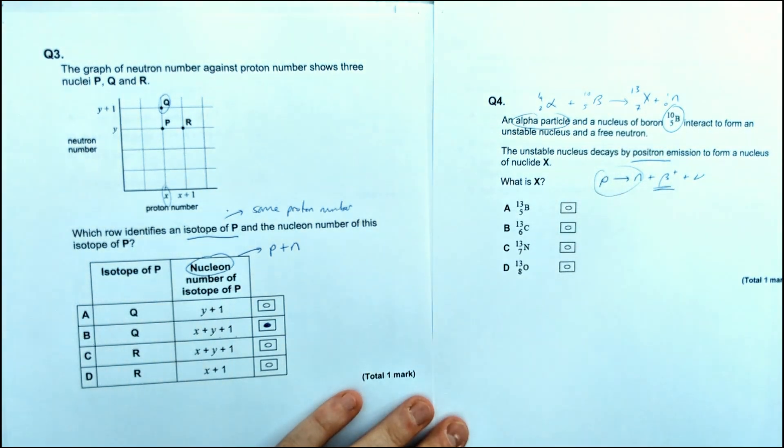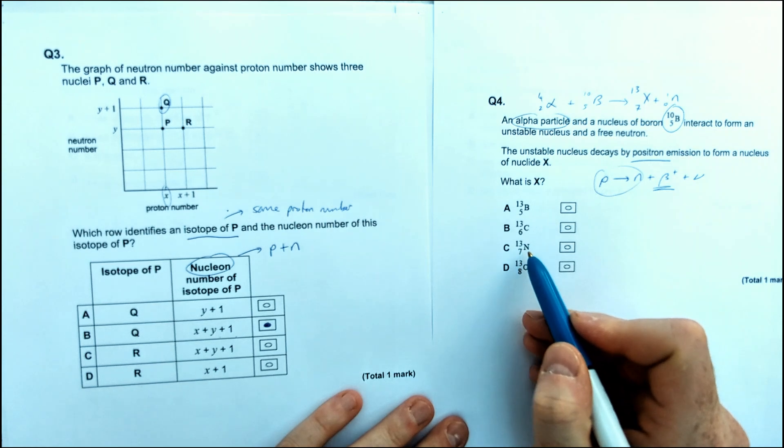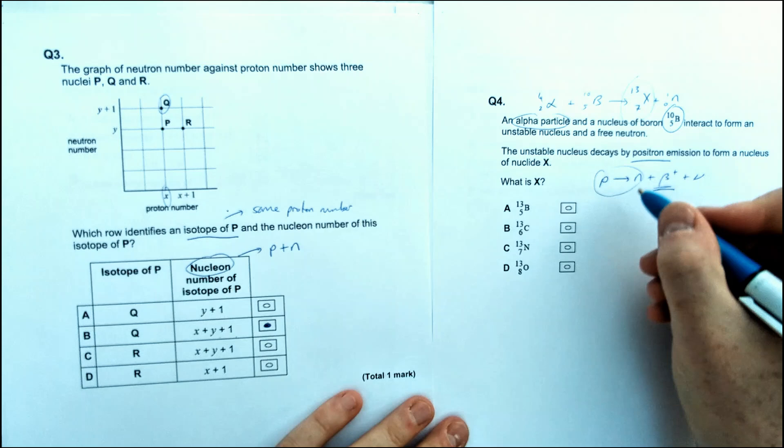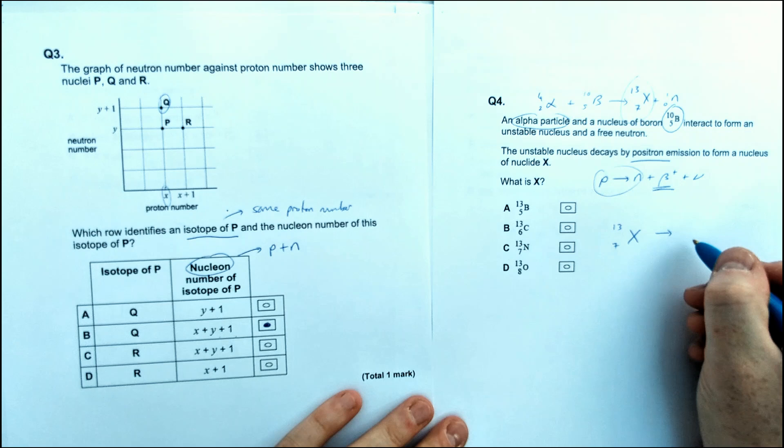So if we look carefully, we're going to have this element here, which is going to be originally nitrogen. However, then we said it loses a proton to become a neutron. So we have this element here, so 13 and 7.